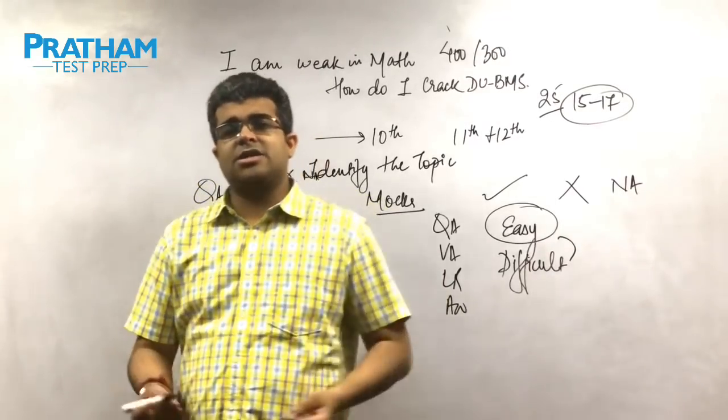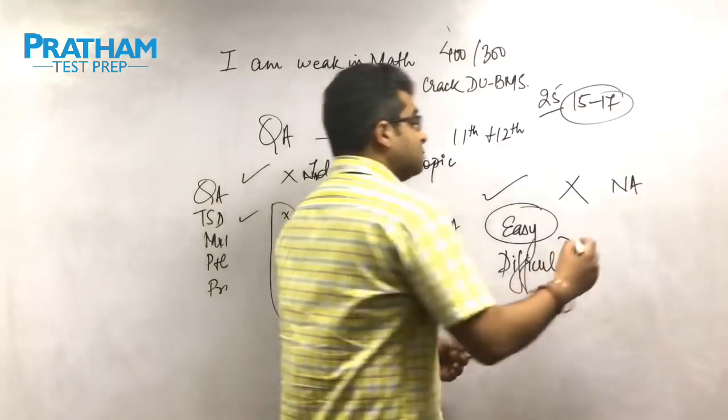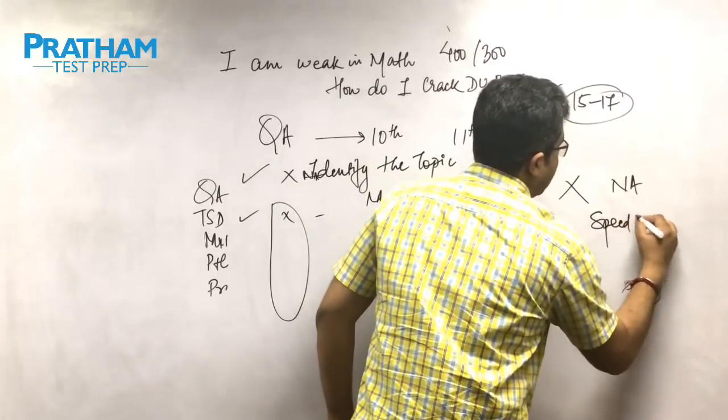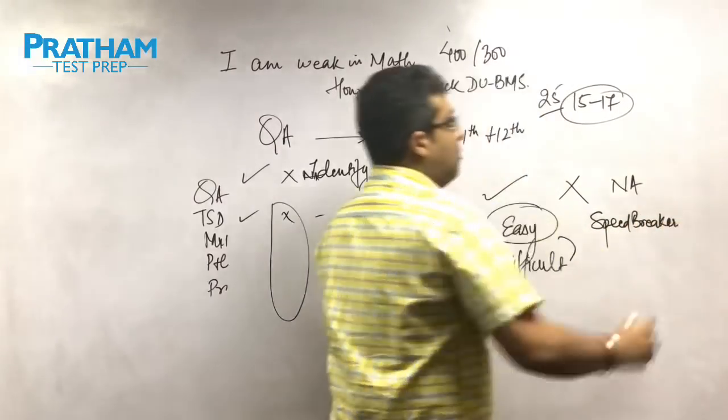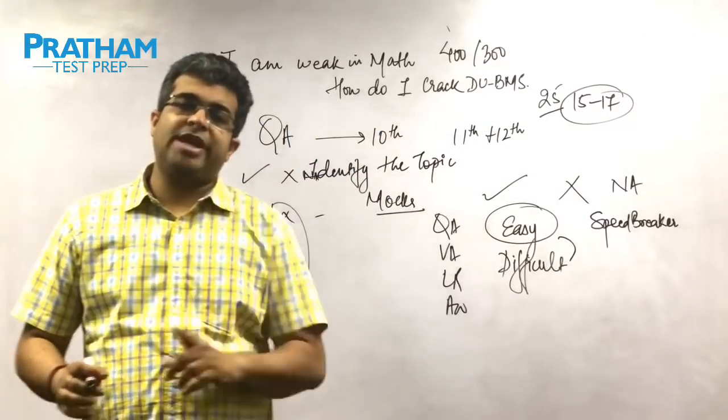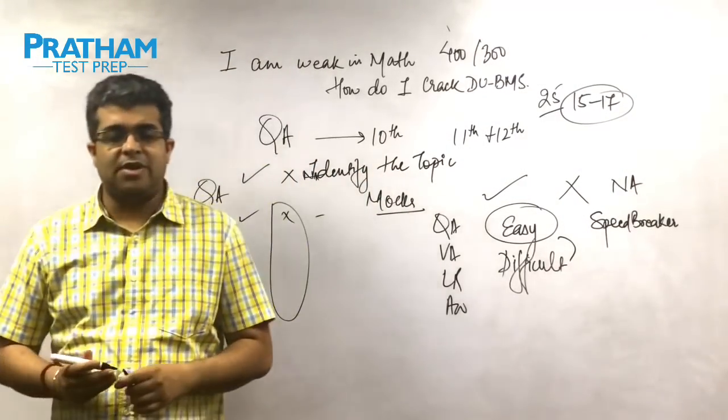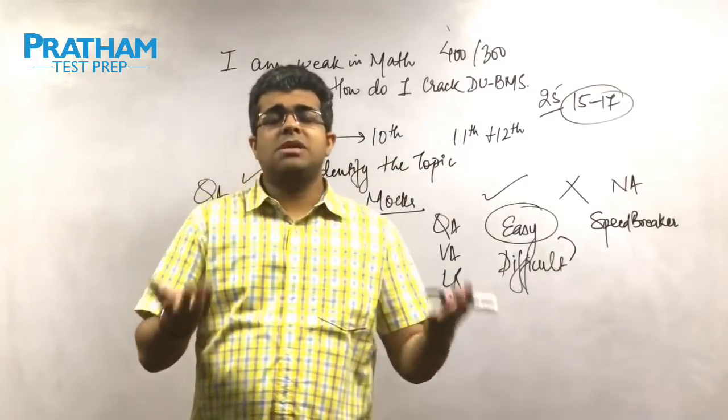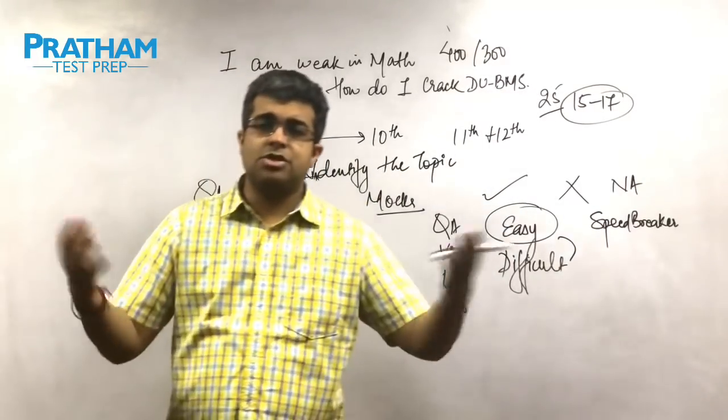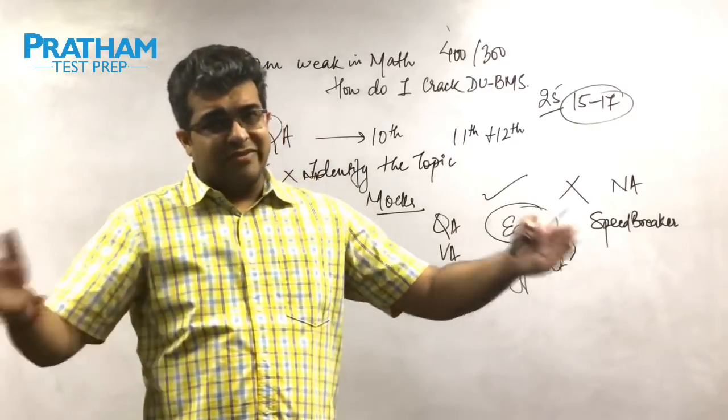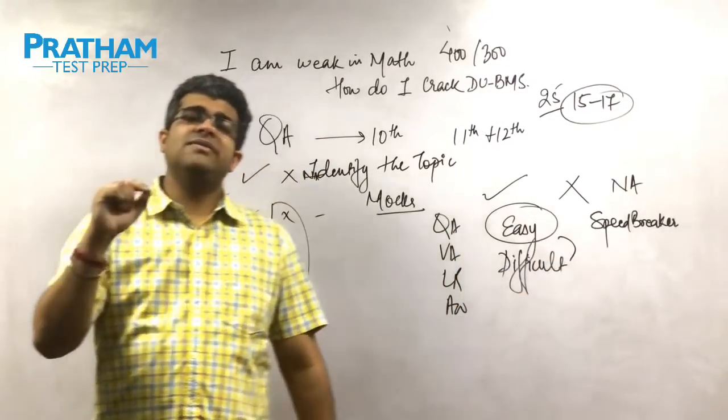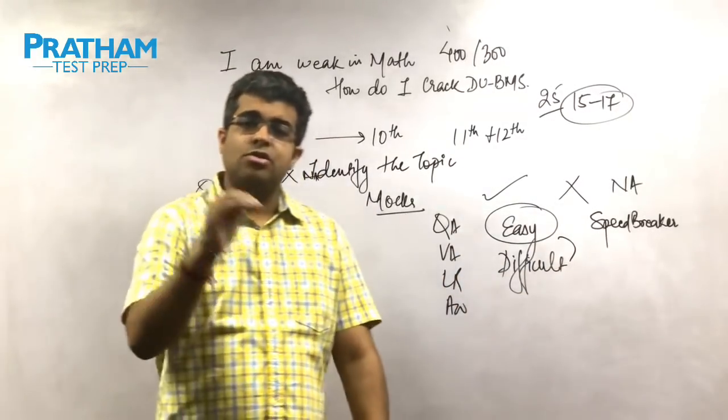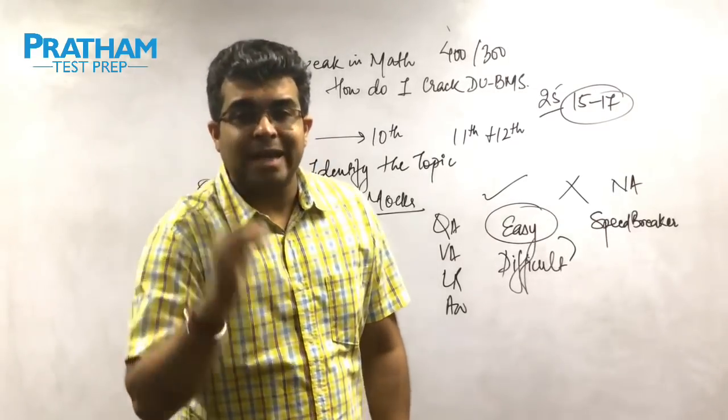And then there are obviously in any section that you have certain speed breaker questions which are essentially made or put into the paper to break your flow or your speed of answering the question. Now when you are able to identify there is a complicated question you're not able to get to the logic, or a question which you think has extensive calculation, these can be identified as speed breaker questions and should not be attempted by the students.